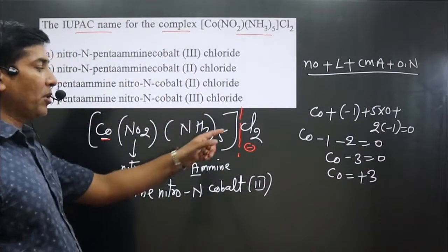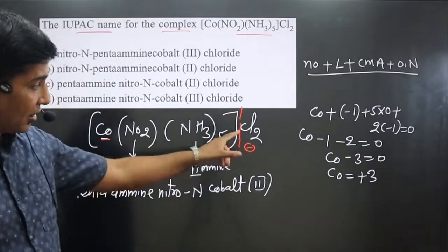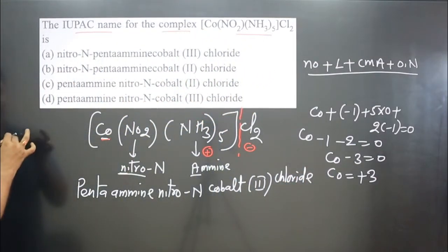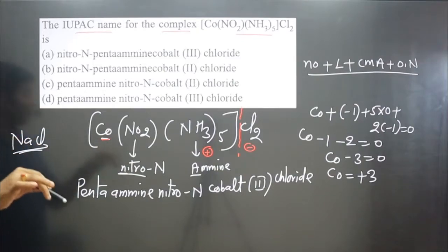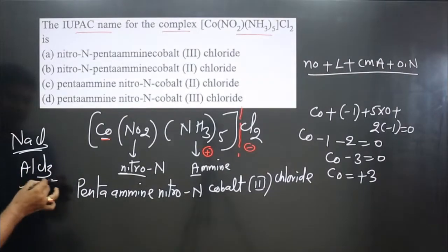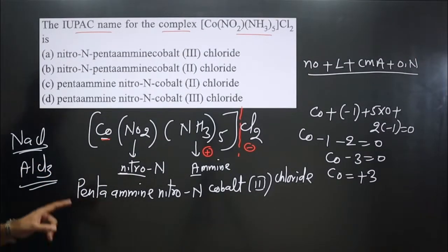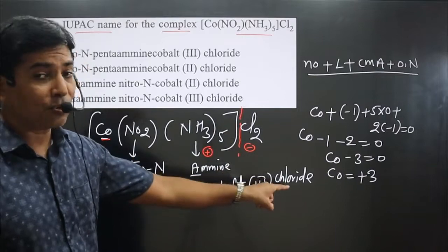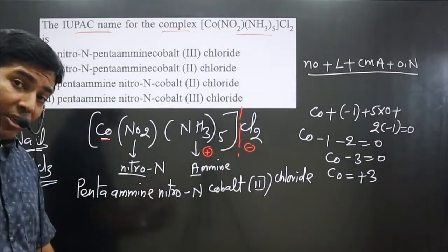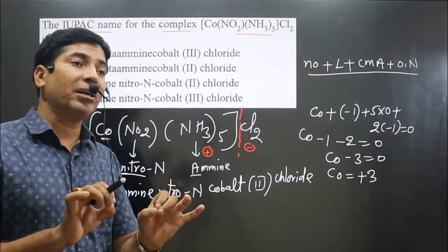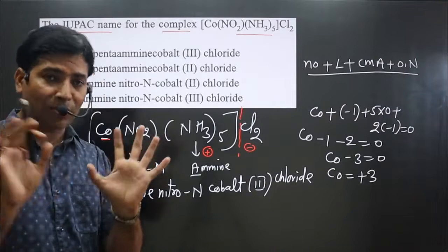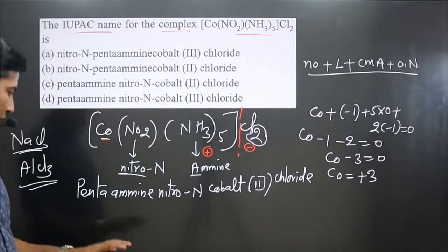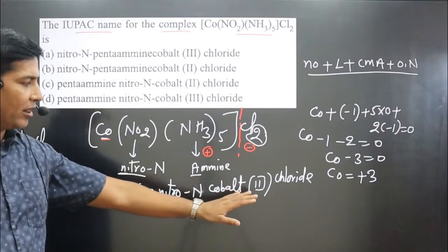After that, we name the counter ion using the common name — chloride. We should not say dichloride. For example, NaCl is sodium chloride and AlCl3 is aluminium chloride — we do not say aluminium trichloride, because the number three is obtained by balancing the charge. Similarly, we get two by balancing the charge here, so we should not say dichloride. Whatever the number of counter ions, we mention only the common name — chloride.